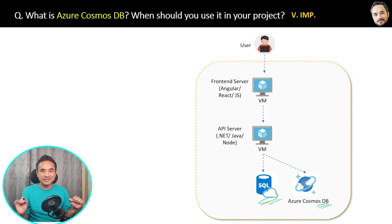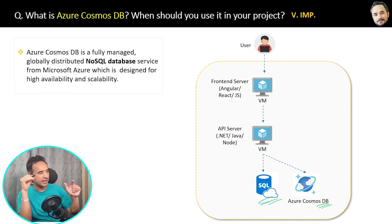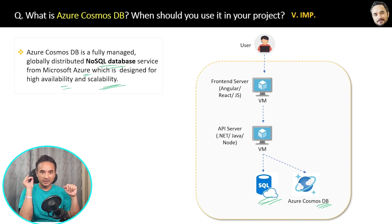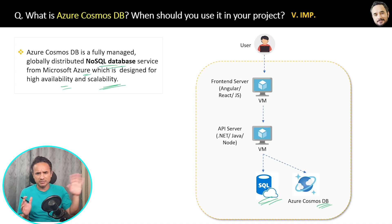What is NoSQL, unstructured, and semi-structured data? I will explain that in an upcoming question. But first, here is the definition of Azure Cosmos DB: it is a fully managed, globally distributed NoSQL database service from Microsoft Azure, designed for high availability and scalability. Just like SQL is a type of RDBMS, Cosmos DB and MongoDB are types of NoSQL databases.